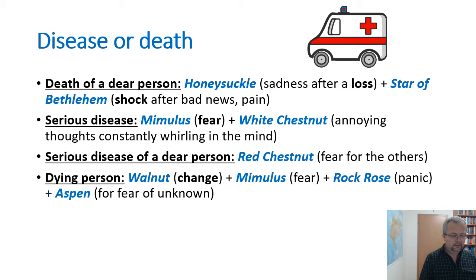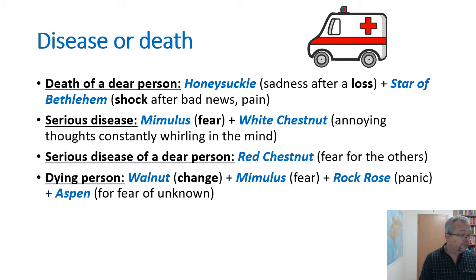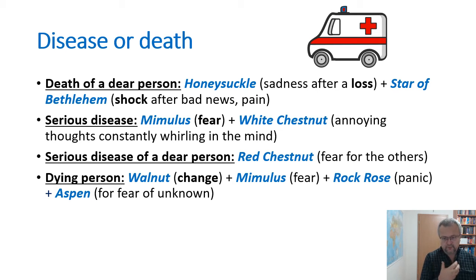Now we go to more serious situations. They are quite similar in some aspects, so we present the basic remedies and then add others to improve the combination. After the death of a dear person, the best combination is usually Honeysuckle for sadness after the loss — these people often return to the past and keep, for example, the room of the deceased in the same condition as it used to be — and Star of Bethlehem for shock, when it comes suddenly and unexpectedly and the person is paralyzed and cannot think, sometimes behaving as if nothing happened. Star of Bethlehem types do not like to be consoled, so they keep emotions inside where they cannot be processed.